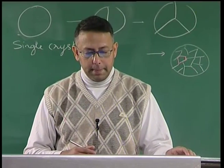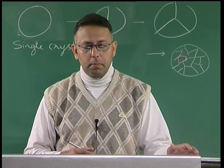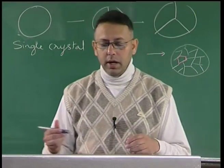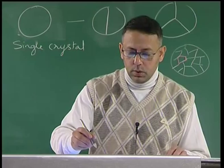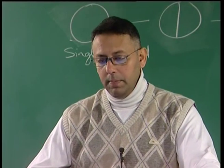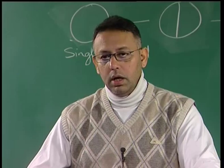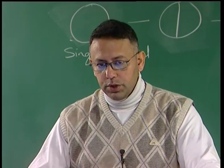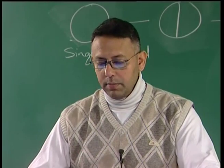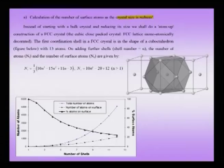Instead of a top-down approach where we start with a particle and cut it down, let us start with a bottom-up approach. This will throw light on concepts like when you take a nanocrystal it is often not spherical — it could be polyhedral. Additionally there are certain magic numbers which appear, meaning certain numbers of atoms are stabilized.